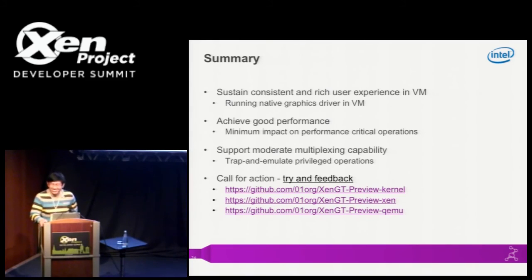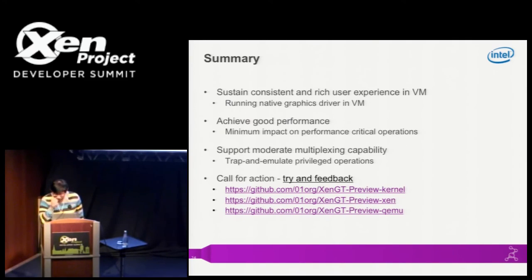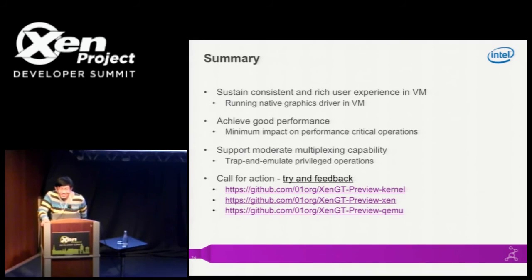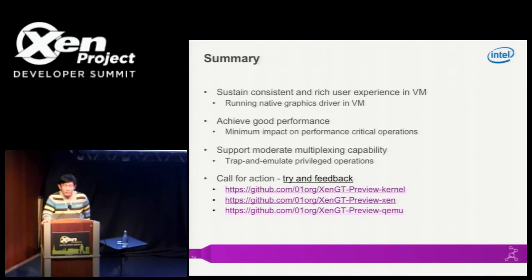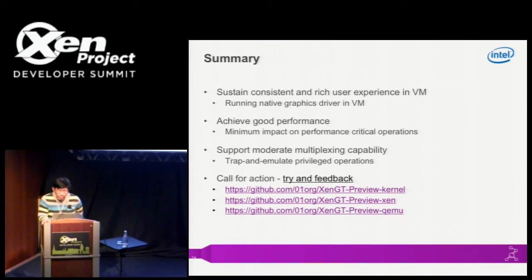Regarding the GitHub repository: we only hosted patches rather than the full code tree because we don't have enough space in the GitHub account to host the whole Xen tree, QEMU tree, and kernel tree. Regarding the Xen patch being large and dedicated to this purpose rather than using a more general secondary emulator approach: the Xen patch is quite large, and the kernel patch is even bigger.